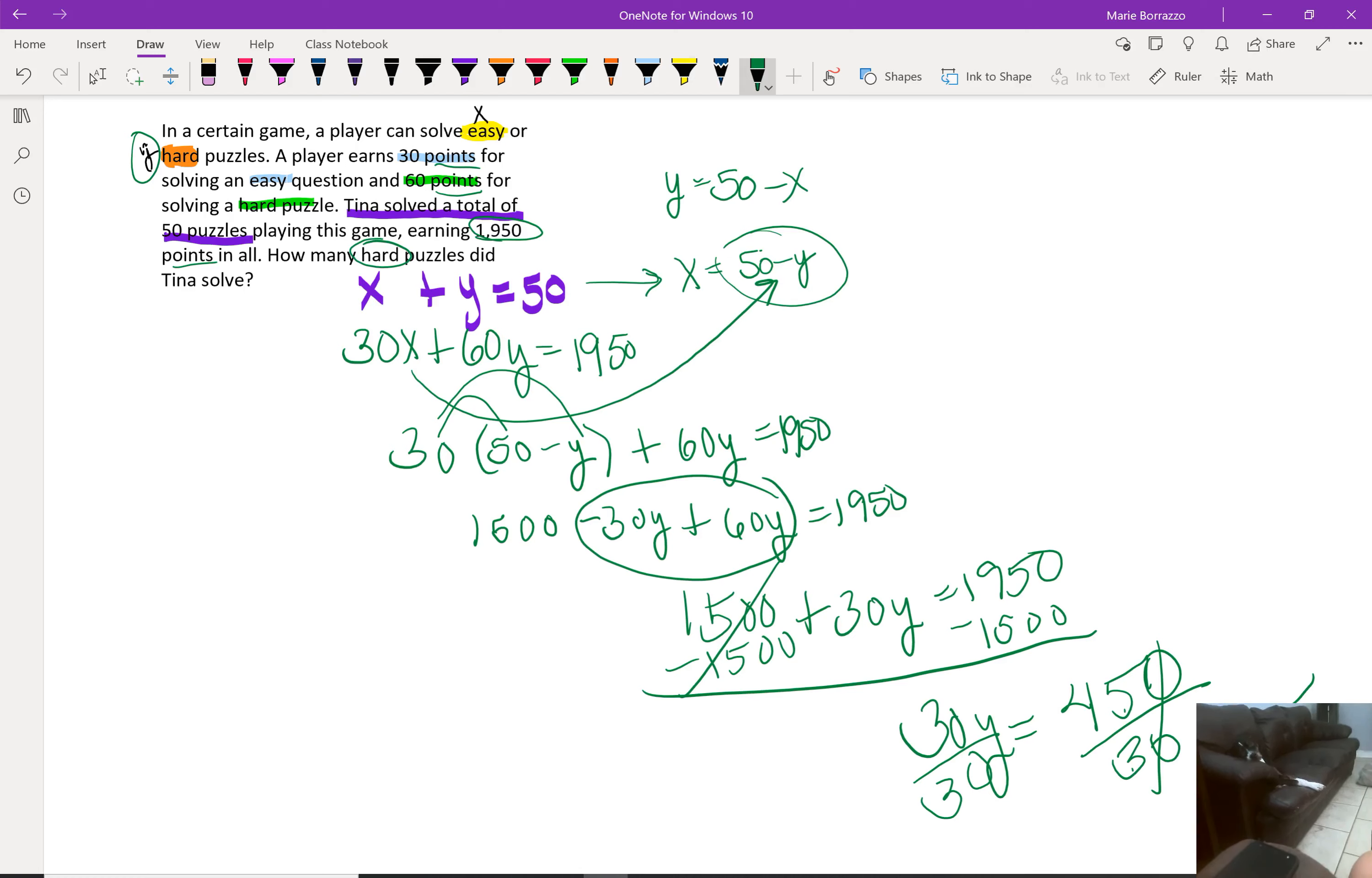Now if they happen to have asked easy, all you got to do now is go back here and say, well then, easy plus 15 is equal to 50, which means that easy puzzles—subtract 15 on both sides—you get x is equal to 35. So she completed 35 easy puzzles and 15 difficult puzzles.